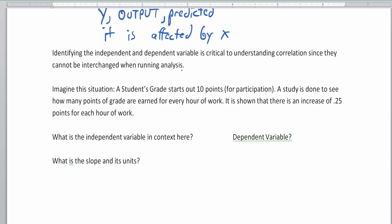Identifying the independent and dependent variable is critical to understanding correlation since they cannot be interchanged when running analysis. You can't just flip-flop them. Here's a situation: A student's grade starts out at 10 points for participation. A study is done to see how many points of a grade is earned for every hour of work. It is shown that there is an increase of 0.25 points for each hour of work. What's the thing we can change, and what gets changed by that?